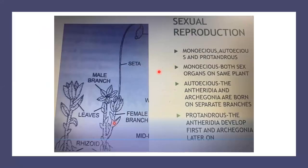In the last video, we discussed how these sex organs are positioned. This is the branch which is called as the male branch, and here at the tip of the branch are present antheridia in a group, and they are surrounded by a cluster of leaves. This branch is growing extra-axillary upwardly, and here again there is a cluster of leaves, and in this cluster at the tip are present archegonia. All the sex organs are present on the same plant, so this condition is monoecious. When they are born on different branches, this is called as autoecious. Antheridia mature earlier and are formed earlier than archegonia — this is called as protandrous condition.